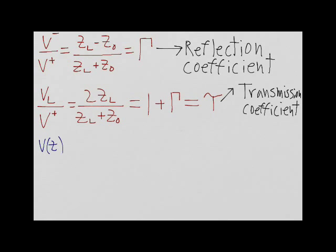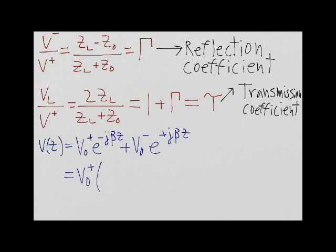Let's write the expression for V of Z equal to V0+ times e to the minus j beta Z plus V0- times e to the plus j beta Z. Substituting in gamma, this is equivalent to the following expression.